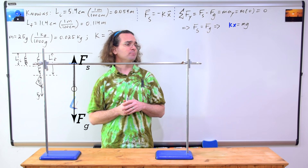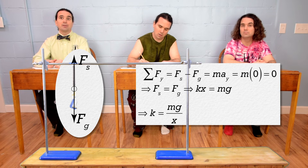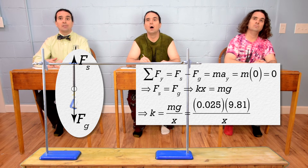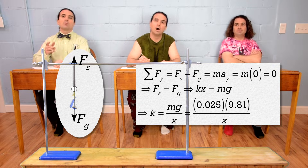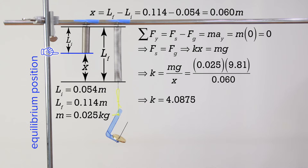Billy, please finish the problem. Now we can divide both sides by the displacement from equilibrium position and substitute in numbers. Mass is 0.025 kilograms. Acceleration due to gravity is 9.81 meters per second squared. The displacement from the equilibrium position — we need to solve for that. That would be the final length minus the initial length, or 0.114 minus 0.054, which is 0.060 meters. And that gives us a spring constant of 4.0875, or 4.1 newtons per meter with two significant digits.